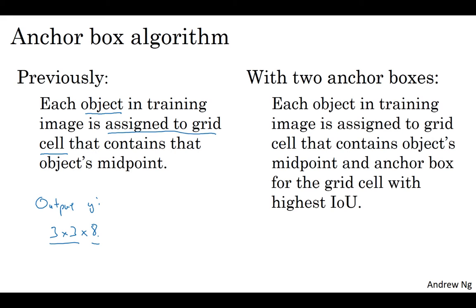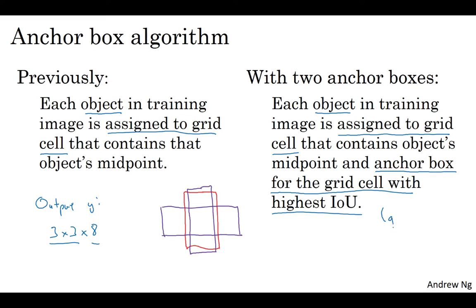With the anchor box, you now do the following. Now, each object is assigned to the same grid cell as before - assigned to the grid cell that contains that object's midpoint - but it's assigned to a grid cell and anchor box with the highest IOU with the object's shape. So you have two anchor boxes. You would take an object and see - if you have an object with this shape, what you do is take your two anchor boxes. Maybe one anchor box is this shape, that's anchor box one. Maybe anchor box two is this shape. And then you see which of the two anchor boxes has a higher IOU with the ground truth bounding box. And whichever it is, that object then gets assigned not just to a grid cell but to a pair - it gets assigned to a grid cell, comma, anchor box pair.